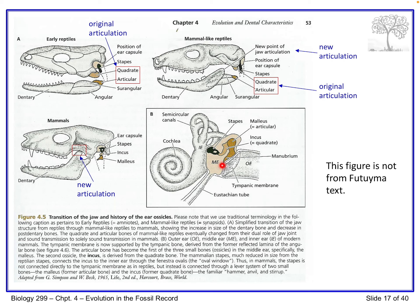Let's look at those middle ear bones. In the modern mammal middle ear, you see the stapes. The stapes taps on the oval window of the inner ear, setting up a pressure wave in the fluid there, which is then detected by your nervous system and interpreted as sound. The stapes is attached to the incus, which used to be the quadrate, and the incus is attached to the malleus, which used to be the articular. The malleus is attached to the inside of the eardrum. When the eardrum vibrates, it sets up a vibration through these bones, which is transmitted into the cochlea and the semicircular canals.